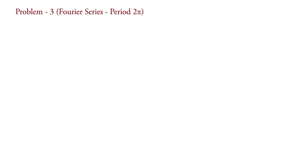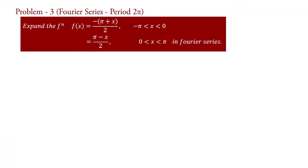Problem: Expand the function f(x) equal to minus(pi + x)/2 for minus pi less than x less than 0, and f(x) equal to (pi minus x)/2 for 0 less than x less than pi, in Fourier series.